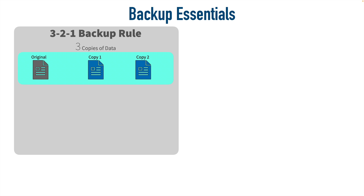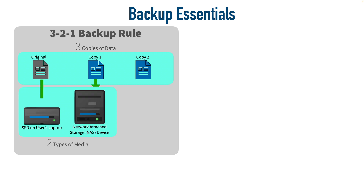The 2 in the 3-2-1 backup rule means that I should have copies of my data on two different types of media. One type of media might be the solid-state drive inside of my laptop, where the original file might live. But in addition to that, let's have it somewhere else, like on a NAS — a network-attached storage device on the network. That's an example of two different types of media. We might also have tape drives backing up a large file server.